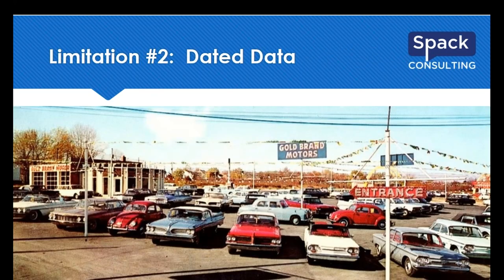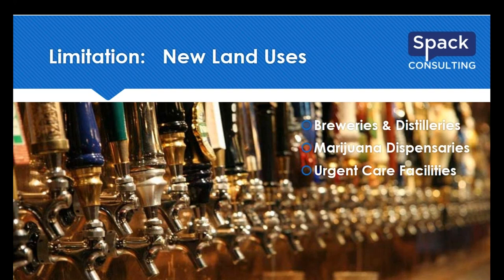The second limitation is old data. Car sales are getting fewer and people are driving less — the trend is that driving has been going down. More people are willing to walk and bike and we're encouraging other modes of transportation. If you include data from twenty years ago, is that really applicable to today's environment? When we looked into what the manual cited, they still include some data from the 1960s — that's nearly sixty years of age on some of that data.